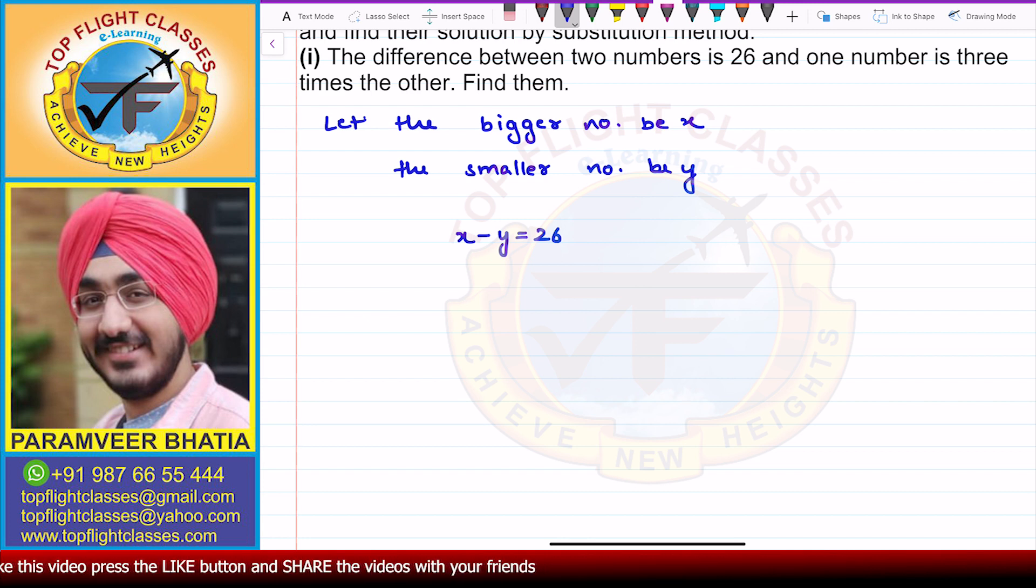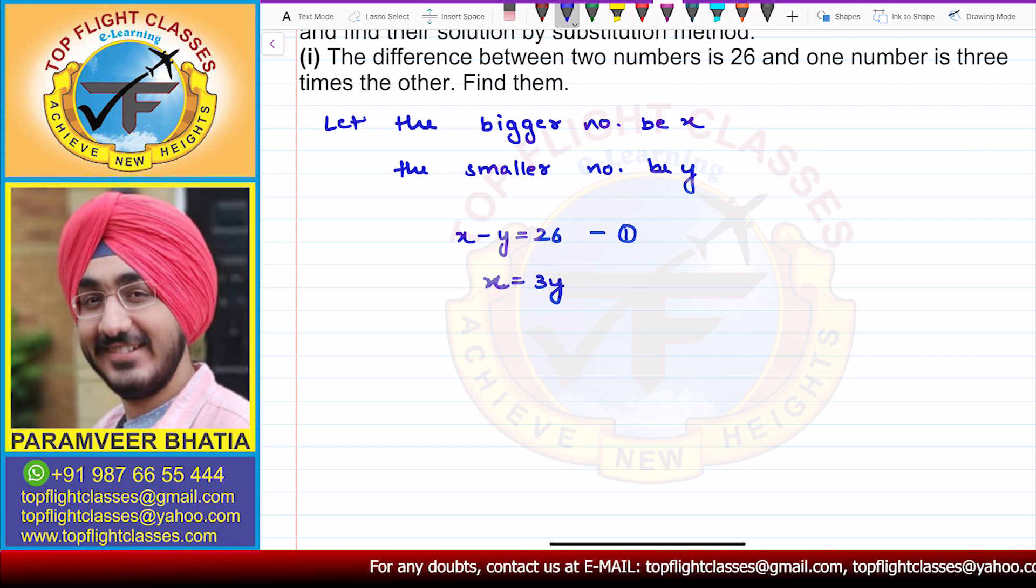And of course one number is three times the other. So what I'll get from here is that x is equal to three times y. Why am I writing like this? Because x is the bigger number, y is the smaller number, and the question says that one number is three times the other. So this is the first equation that I get, this is the second equation that I get.